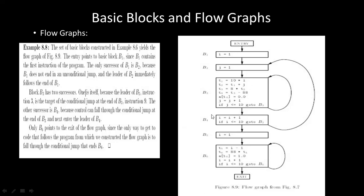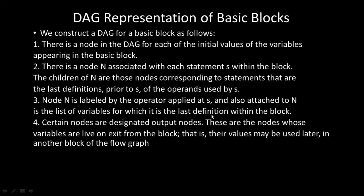Next, the DAG representation of the basic blocks. There is a node in the DAG for each of the initial values of the variables appearing in the basic block. There is also a node associated with each statement S within the block. The children of that node are those nodes corresponding to statements that are the last definition prior to S of the operands that S uses. The node is labelled by the operator applied at S, and attached to it is the list of variables for which this is the last definition in the block. Certain nodes are designated output nodes — these are variables whose values may be used after the block exits.